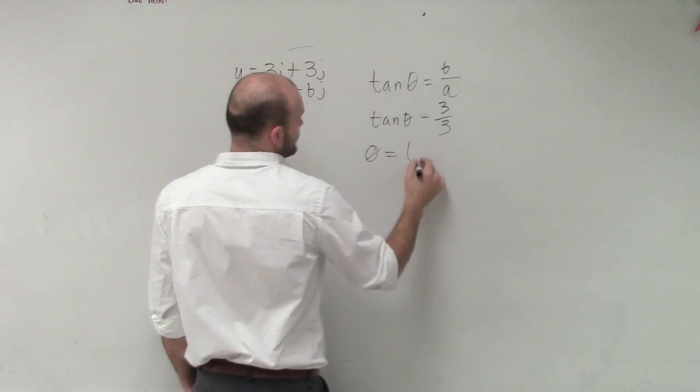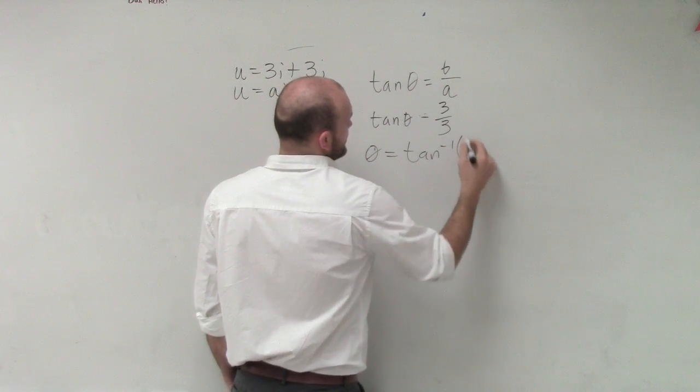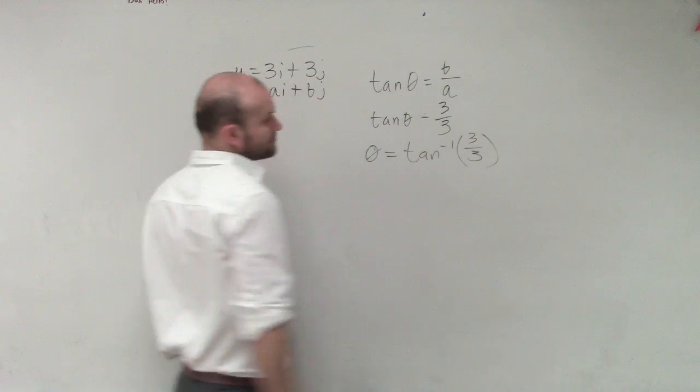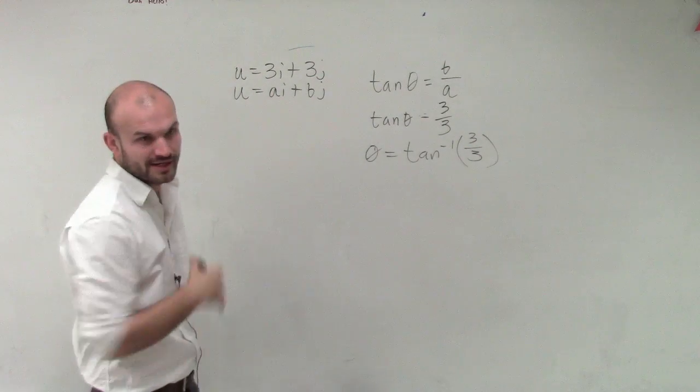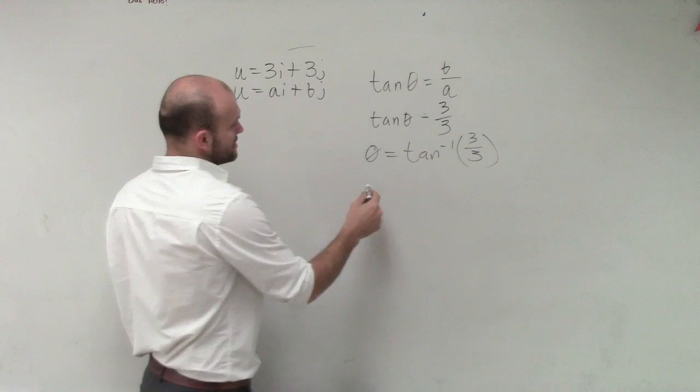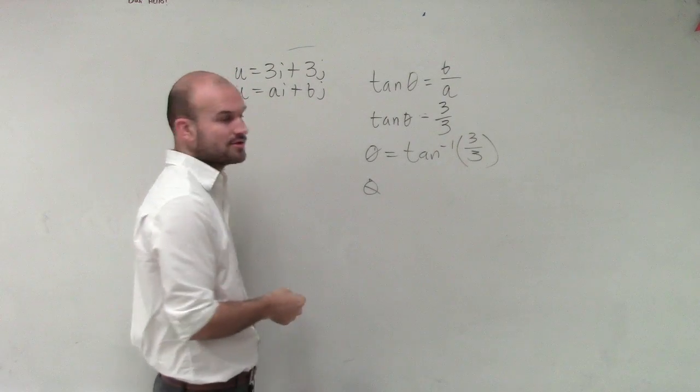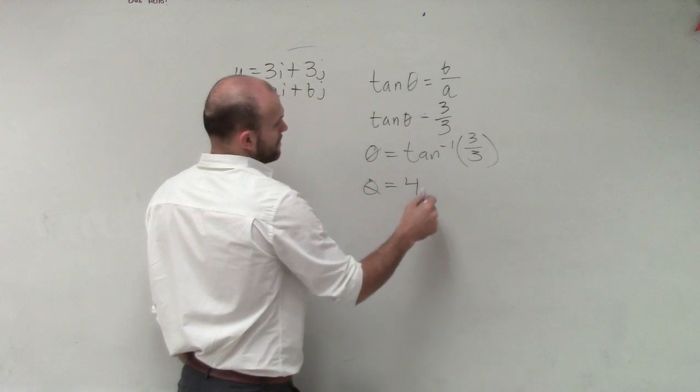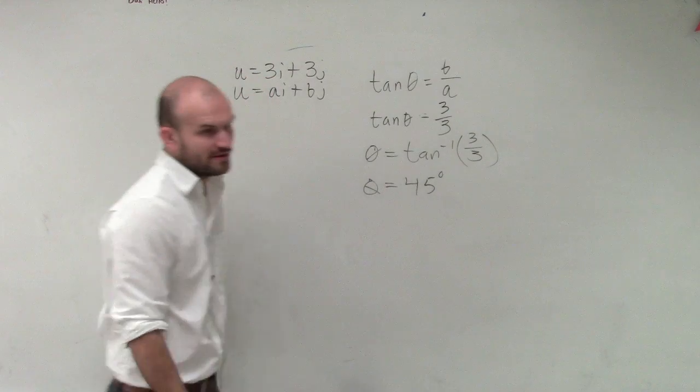Therefore, theta equals tangent inverse of 3 over 3. Well, 3 over 3 is obviously 1. Inverse tangent of 1 is going to be 45 degrees.